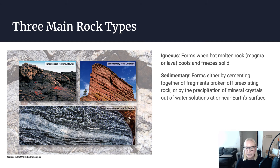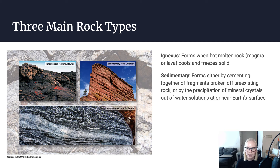Let's talk about sedimentary rocks. Sedimentary rocks form either by cementing together fragments broken off from pre-existing rock, or by the precipitation of mineral crystals out of water solution when the rock is at or near earth's surface. A sandstone is a great example — it's a bunch of pre-existing sand grains that have been cemented together by quartz or some other mineral. You can also have things dissolved in water: quartz can be dissolved in water at high temperatures, and calcite can be dissolved in water at high temperatures. Once that water leaves the system, it can leave behind quartz and calcite in the pore spaces and cement those grains together.